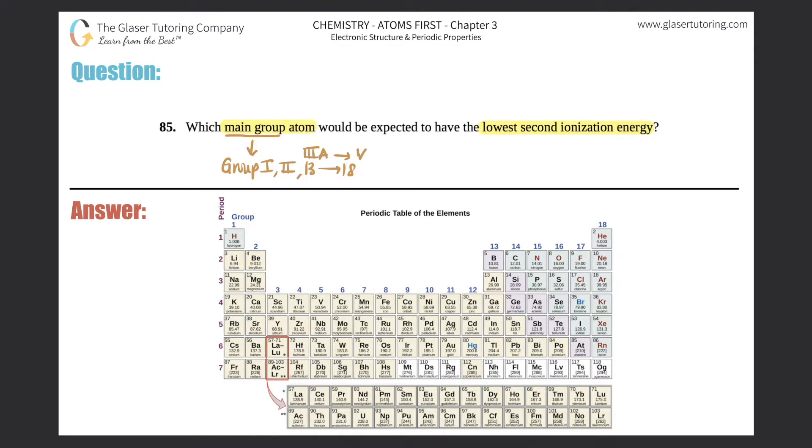That gets rid of these—no elements in here, these are your transition metals—and no elements here, these are your inner transition metals. Now you've grouped it down to either this category and this category.